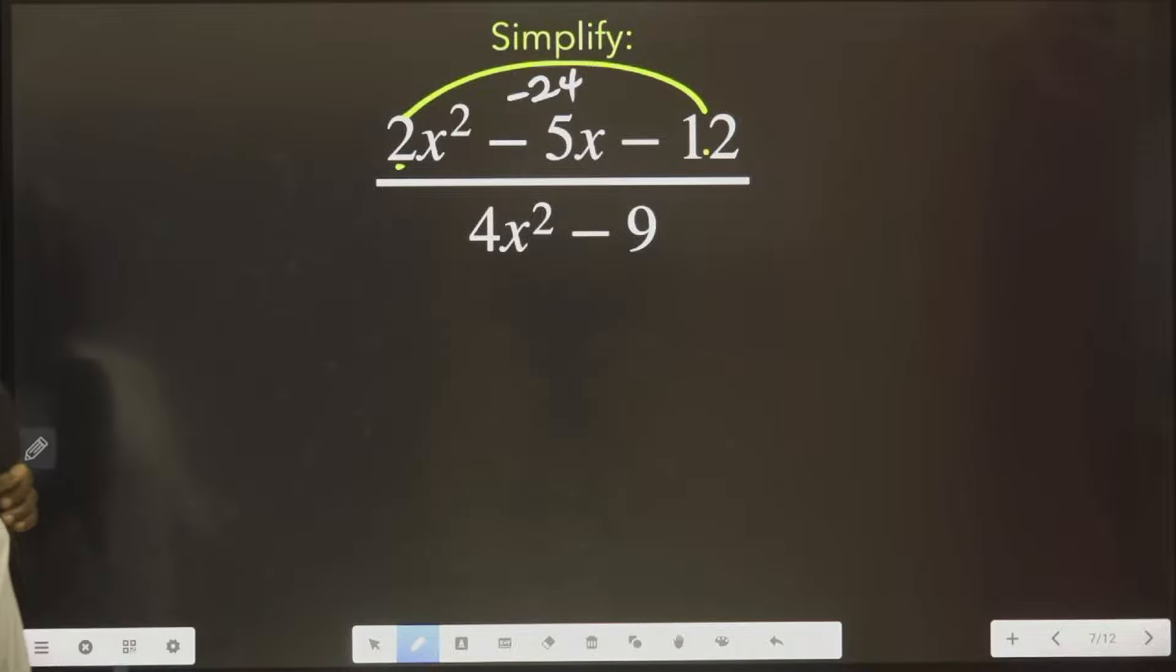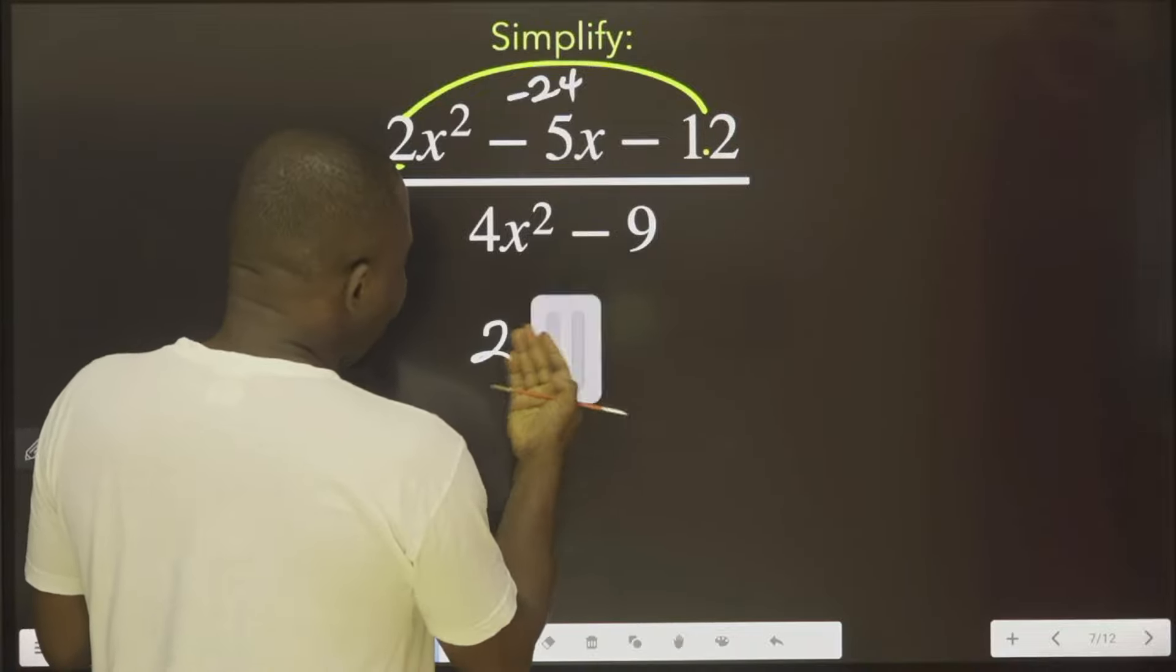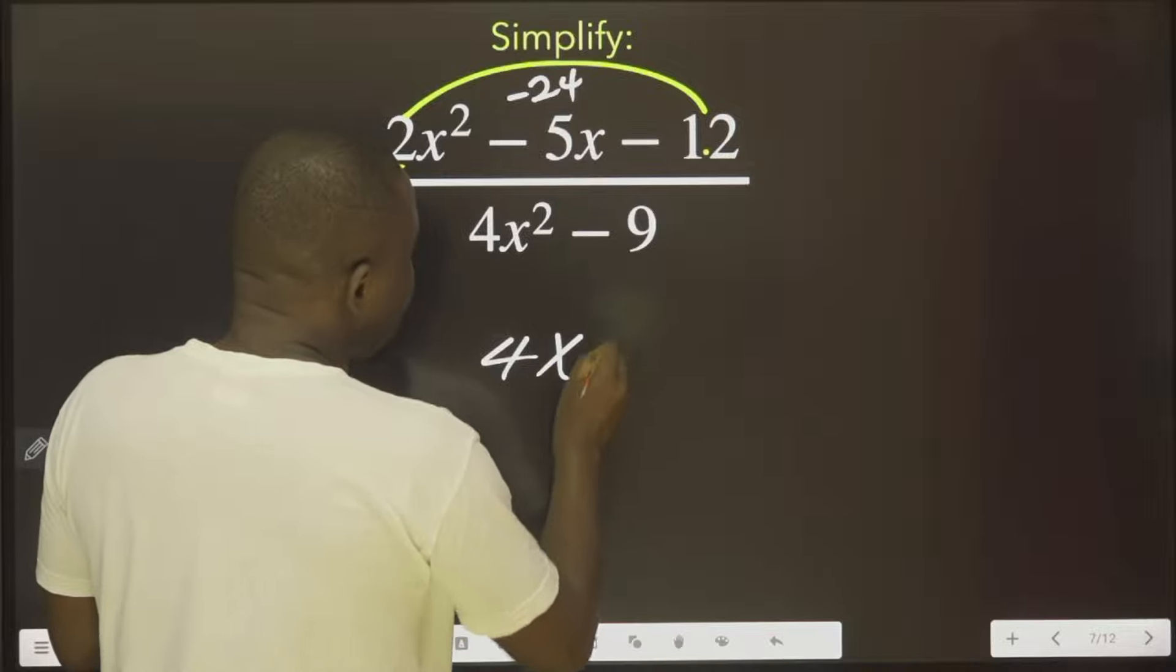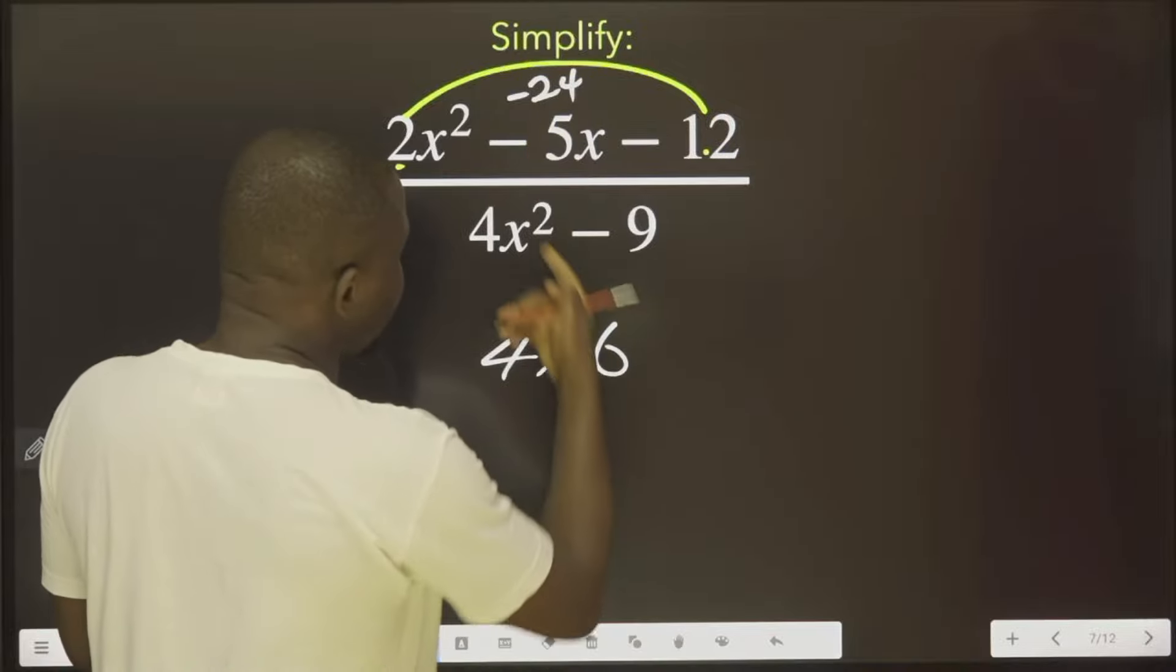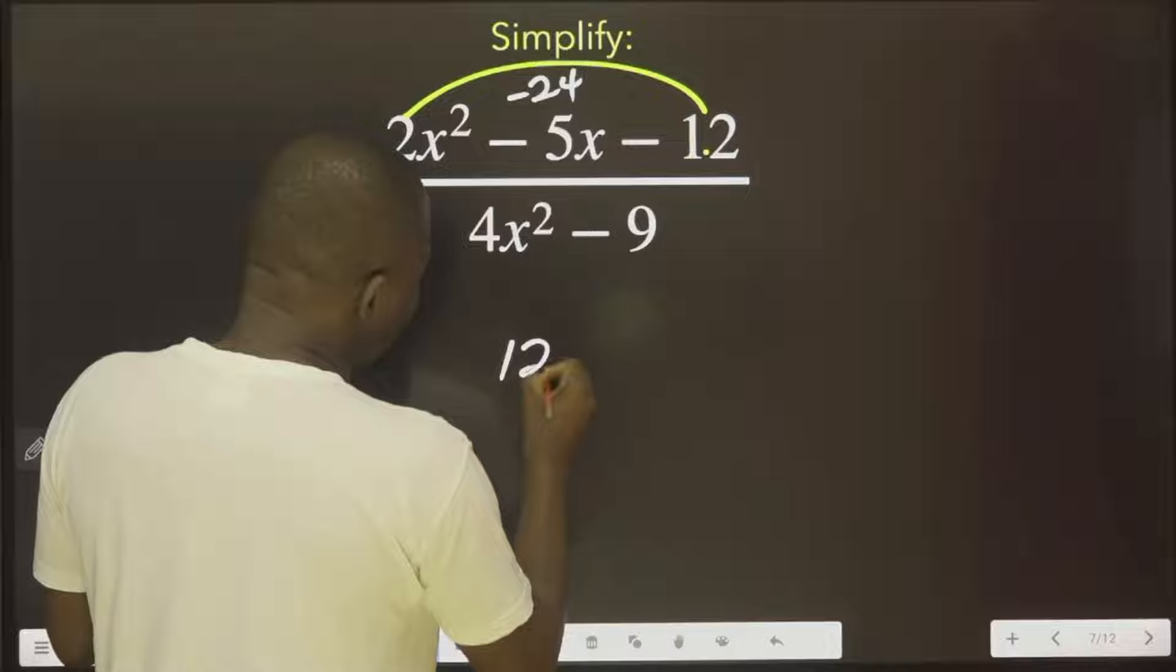We are going to check. If I do 4 times 6, although it will give me 24, but there is no way it will give me this. I will do 12 times 2.